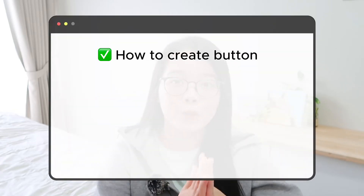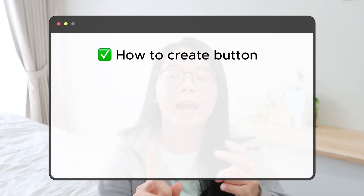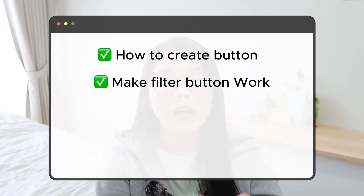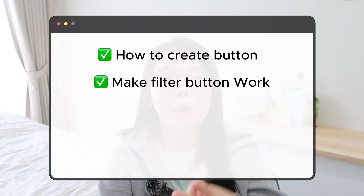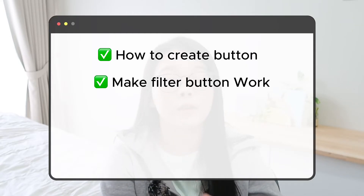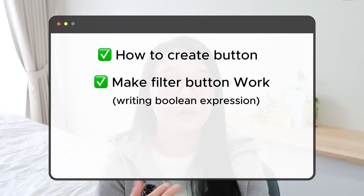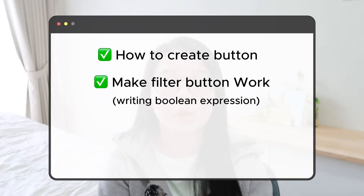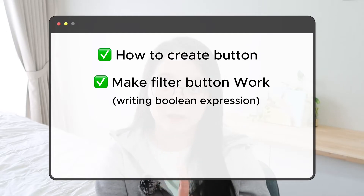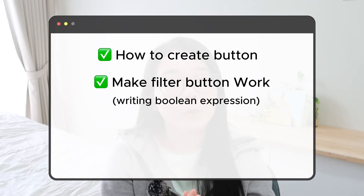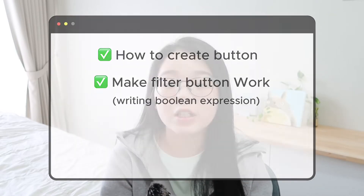In today's tutorial, I'm going to cover how to create a simple button and then make that button work with the calculated field. This is a very important thing we must do in order to get the filter working. We're going to write the expression for the filters, starting with the easiest one, which consists of only one condition, and then move on to multiple conditions. If you're ready, let's start.